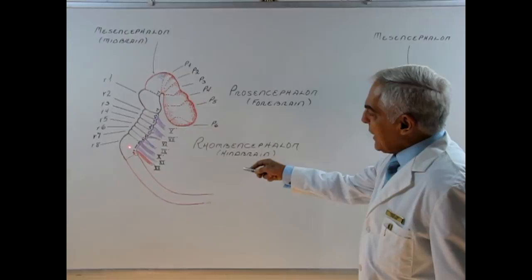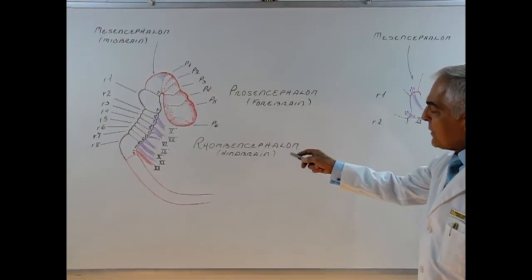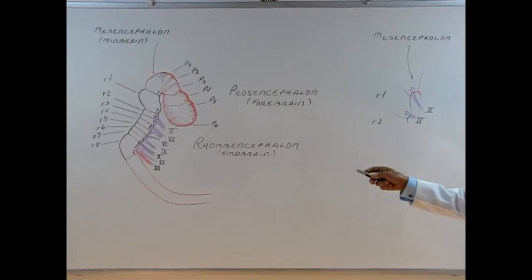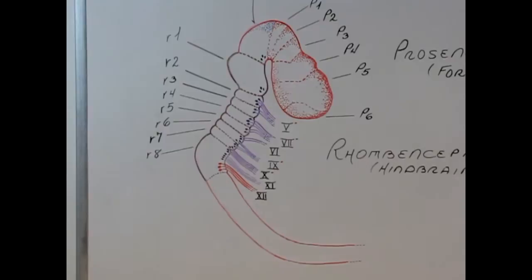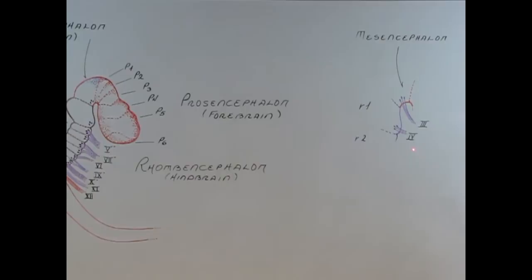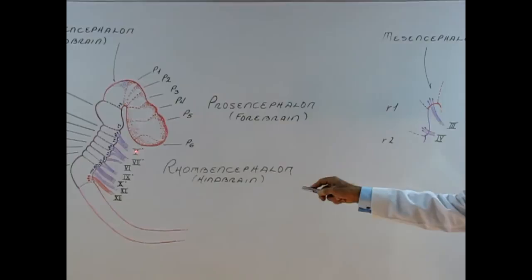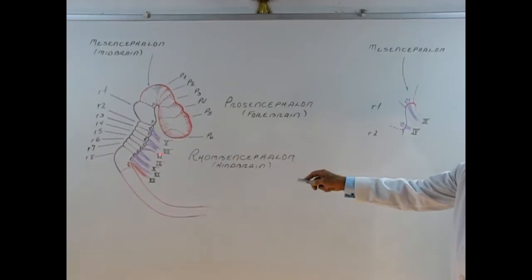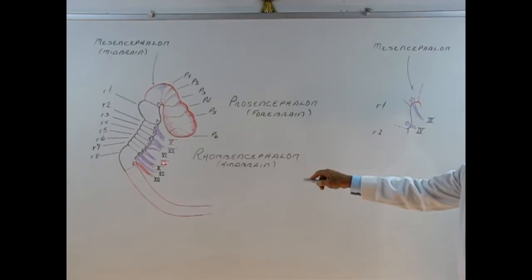Rhombomeres one through eight are involved in the formation of the following cranial nerves: cranial nerve number four, cranial nerve number five, six, seven — while eight is not represented in this illustration — nine, ten, eleven, and twelve.